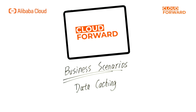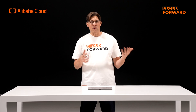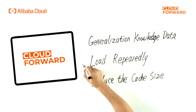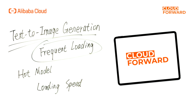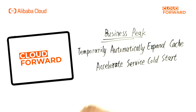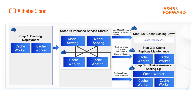In addition, business scenarios determine the frequency of model loading and data I/O access patterns, resulting in different requirements for data caching. Specifically, after the generalization knowledge data of the LLM model is loaded into the GPU at once, there is no need to load it repeatedly, and resources are saved by reducing the cache size. For the text-to-image generation model, there are many styles that require frequent loading, and it's necessary to keep the hot model in the cache to ensure loading speed. During business peak-triggered inference service scaling, there is a need to temporarily and automatically expand cache and accelerate service cold-start. Fluid provides the ability to finely control the lifecycle of data caching, allowing flexible scaling of data caching according to business needs.